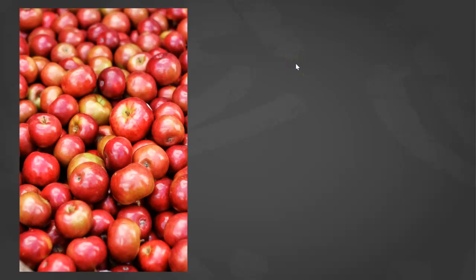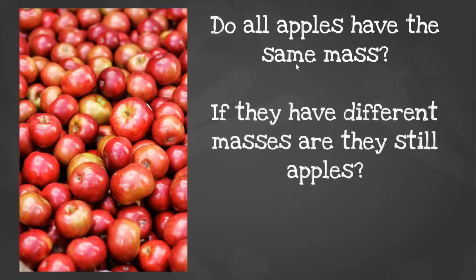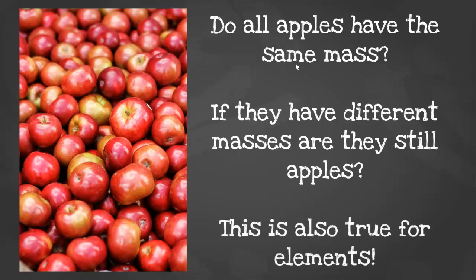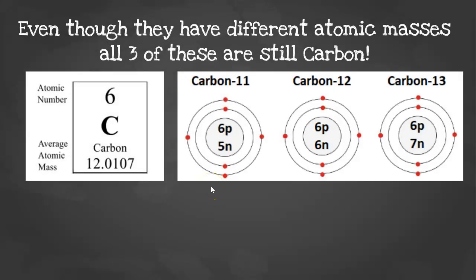Now for our last topic. Before we get to average atomic mass, I want you to think of apples for a second. Do all apples have the same mass? If they have different masses, are they still apples? Of course they are, right? This is also true for elements. Even though they have different atomic masses, all three of these Bohr models still depict an atom of carbon. Because it's carbon, they're all going to have six protons. That's what makes it carbon.